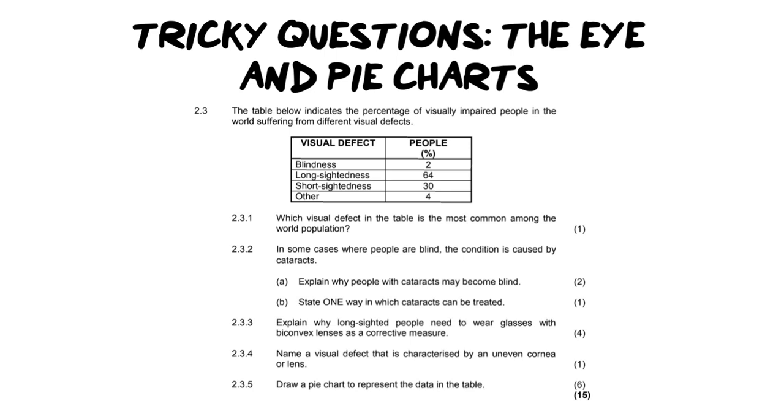The table below indicates the percentage of visually impaired people in the world suffering from visual defects including blindness, long-sightedness, short-sightedness and other. The first question asks which visual defect in the table is most common among the world population. The visual defect with the highest percentage is long-sightedness. Easy peasy on that one.